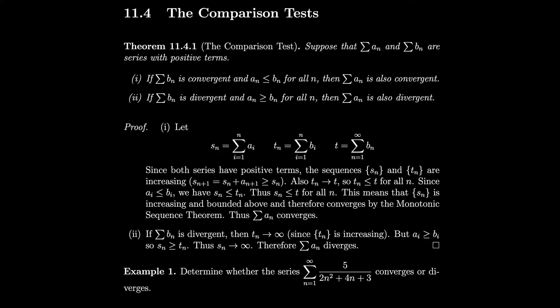Since the B series is convergent, we will let T equal the sum of the B series. Since both series have positive terms, the sequences S_n and T_n are both increasing, and we also have that T_n tends to T. So that means T_n is less than or equal to T for all n. Since our a_i's are always smaller than our b_i's, we must have that S_n is smaller than T_n. So S_n is less than or equal to T for all n. So the partial sum of the a_i's is an increasing sequence and it's bounded above, so it converges by the monotonic sequence theorem, and therefore the sum of the a_n's converges.